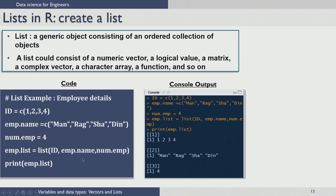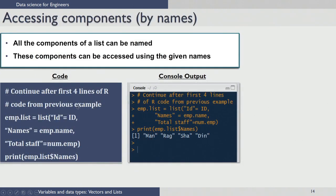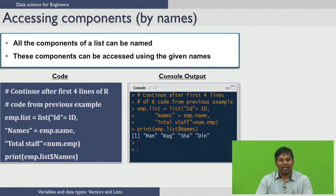Once you create a list, you can print it to see the output. When you execute the code, the console shows the list printed with the first element being IDs 1, 2, 3, 4; the second element containing employee names; and the third element showing the number of employees. All components of a list can be named, and those names can be used to access the components.